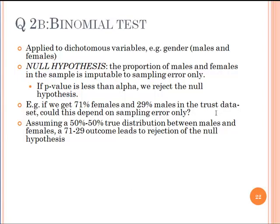The binomial test, which is question 2b, is used for binary or dichotomous variables such as gender - male or female. The null hypothesis is that the proportion of that dichotomous variable in the sample is imputable to sampling error only. If you know that in the world there are 52% females and 48% males, but in your data set you have 71% females and 29% males, then the question is: is this difference because of sampling error or is it more than that? This goes down to how representative your data are. Are the differences due to sampling error or are there systematic biases?